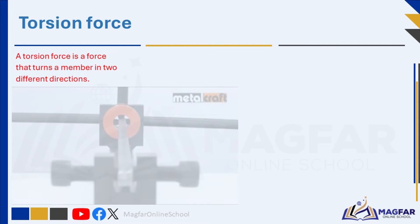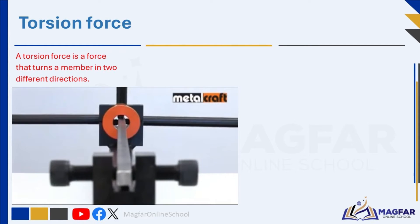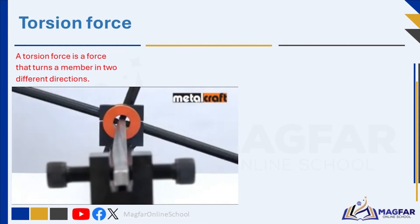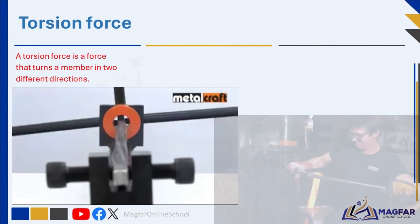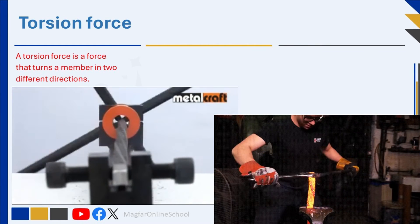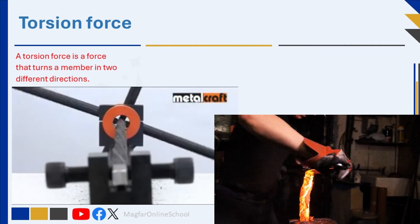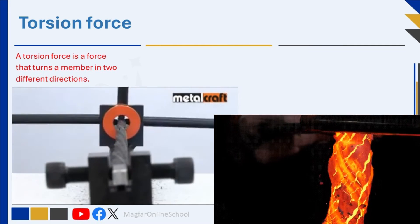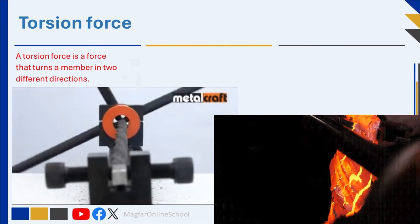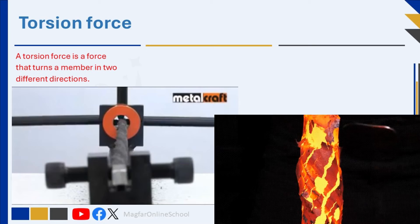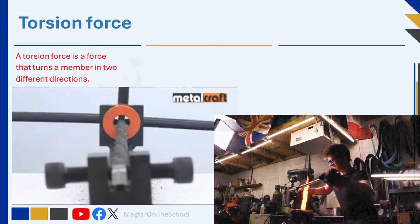A torsion force is a force that turns a member in two different directions, causing a twisting or rotating motion. Strong winds can cause beams on a bridge to twist. A torsion force is twisting one end of the beam in one direction and the other end in the opposite direction.